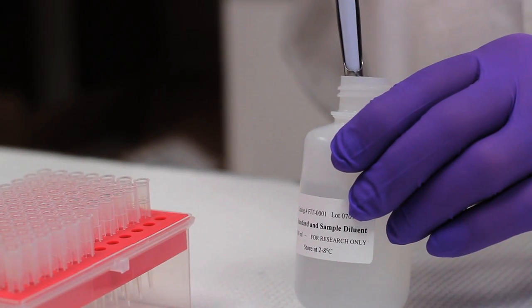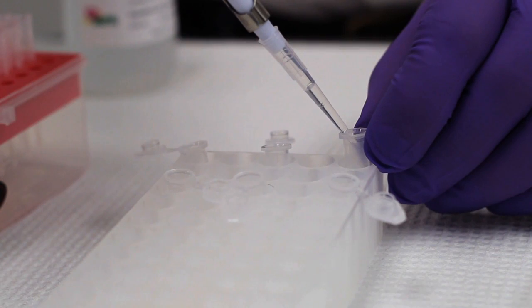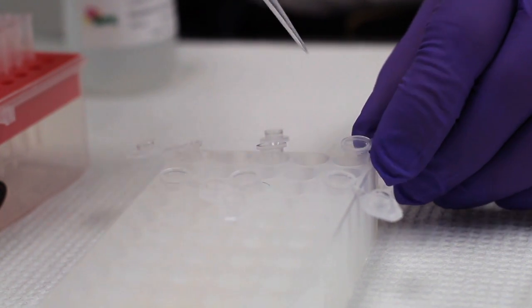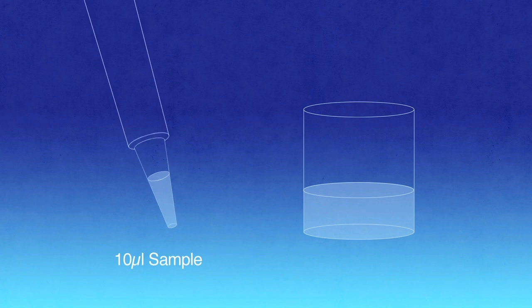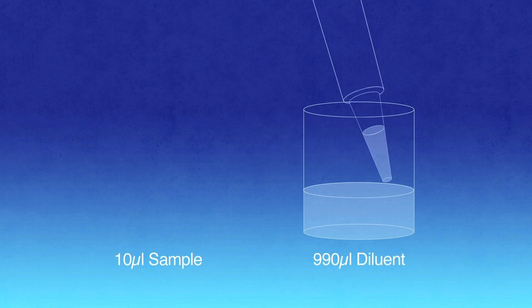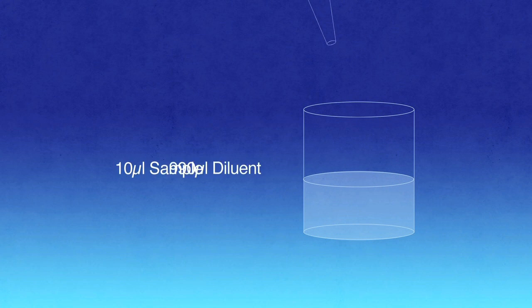When running the assay in duplicate, you will need a total of 100 microliters of diluted sample. As a result, only 10 microliters of undiluted sample is normally required. For example, if you add 10 microliters of sample to 990 microliters of diluent, you will obtain 1000 microliters of diluted sample for analysis.